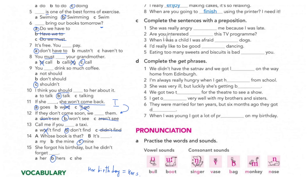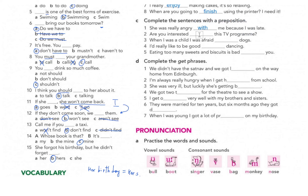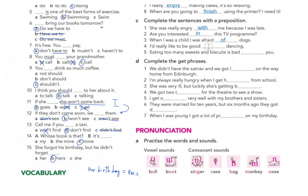Exercise C: complete the sentences with a preposition. Number one: 'She was really angry with me because I was late.' Number two: 'Are you interested in this TV programme?' Number three: 'When I was a child I was afraid of...' Number four: 'I'd really like to be good at dancing.' Number five: 'Eating too many sweets and biscuits is bad for your health.'